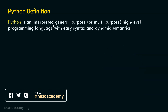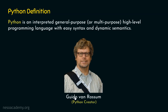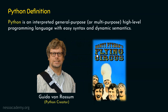Python is an interpreted, general-purpose or multipurpose, high-level programming language with easy syntax and dynamic semantics. Before understanding the meaning of this definition, I would like to tell you who is the creator of Python. Python is created by Guido van Rossum during the period of 1985 to 1990. He named this language Python because he is a big fan of a British comedy series called Monty Python's Flying Circus, and not from a snake.